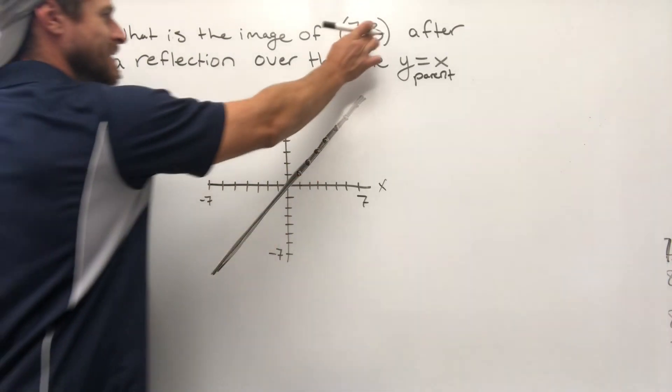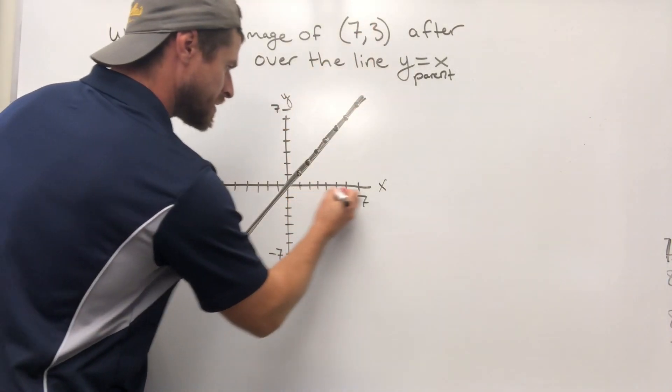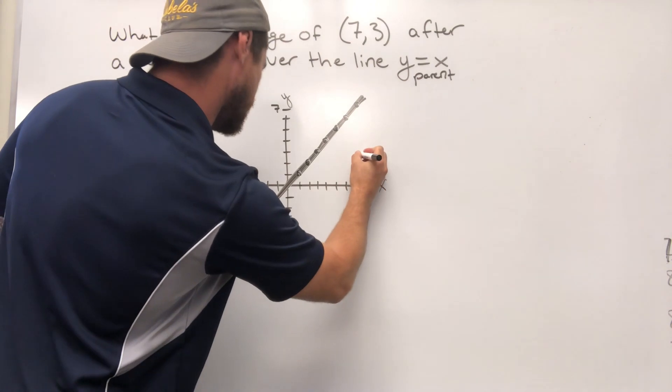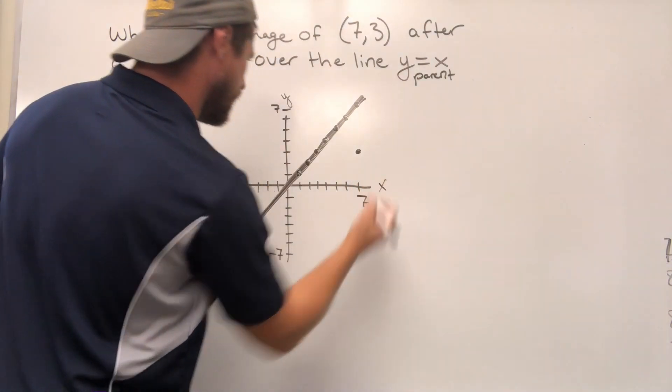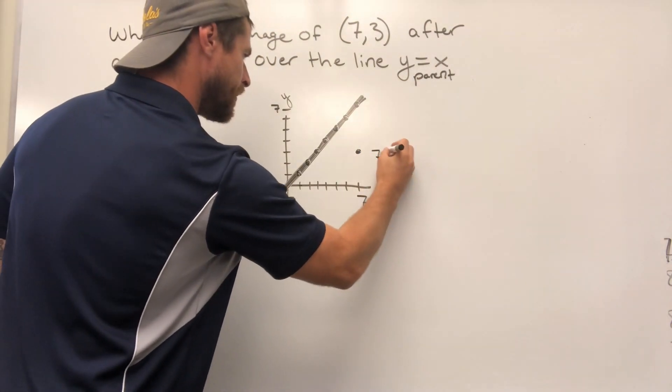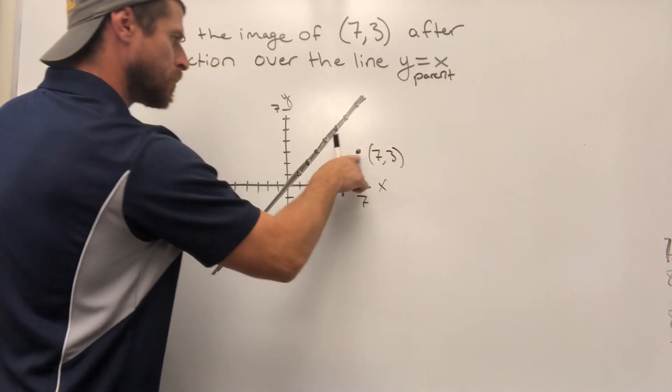Now what we've got to do is plot (7, 3). So we're going to go 7 over, 3 up. That dot's going to land right about there. Now we're at (7, 3) for this singular point.